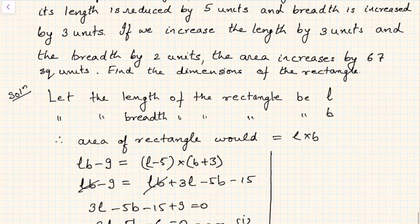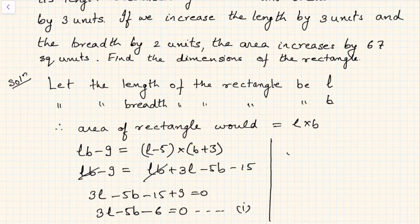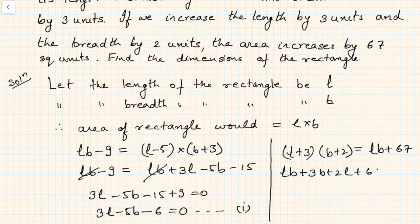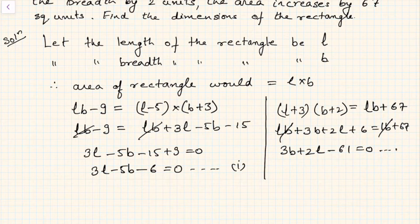On the other hand they say if we increase the length by 3, so L plus 3, and the breadth by 2, so B plus 2, this will be the new area, which is the original area plus 67 square units. Let us simplify this: LB plus 3B plus 2L plus 6 equals LB plus 67. LB gets cancelled, and you will get 3B plus 2L minus 61 equals 0. This is equation number 2.